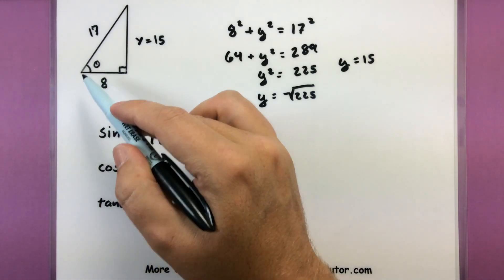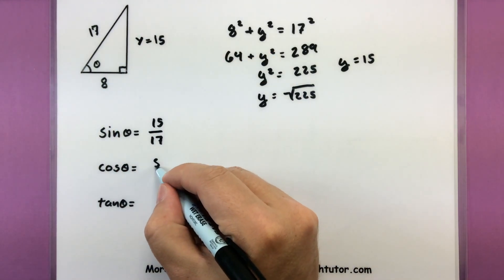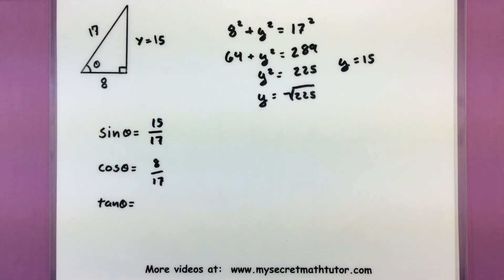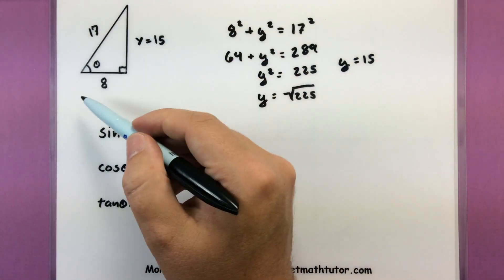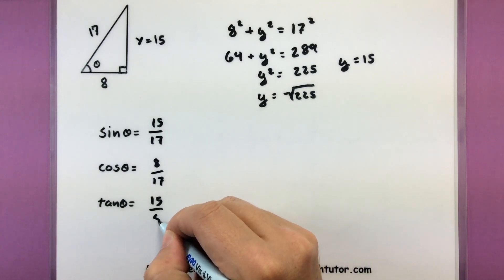Cosine, we have the adjacent over the hypotenuse, so there's eight over seventeen. And lastly, we have tangent, the opposite over the adjacent, fifteen over eight.